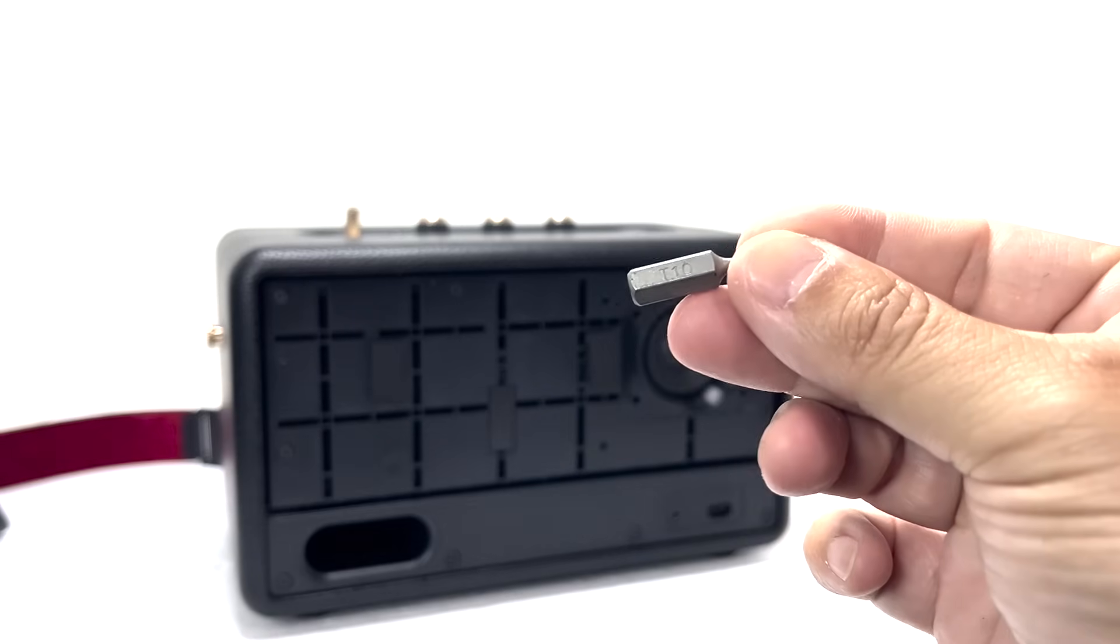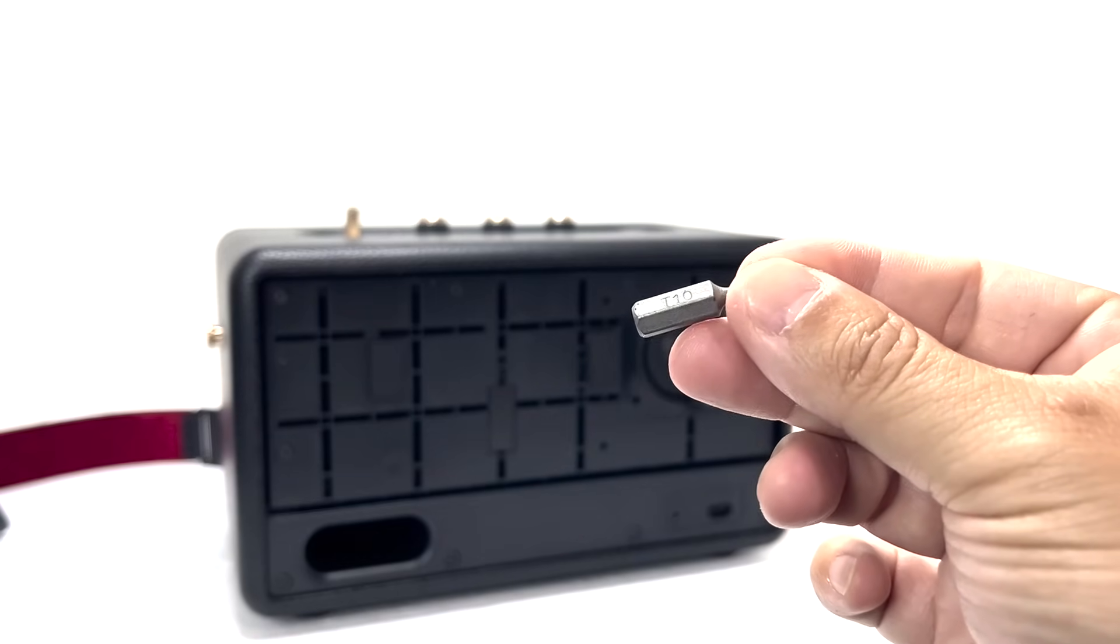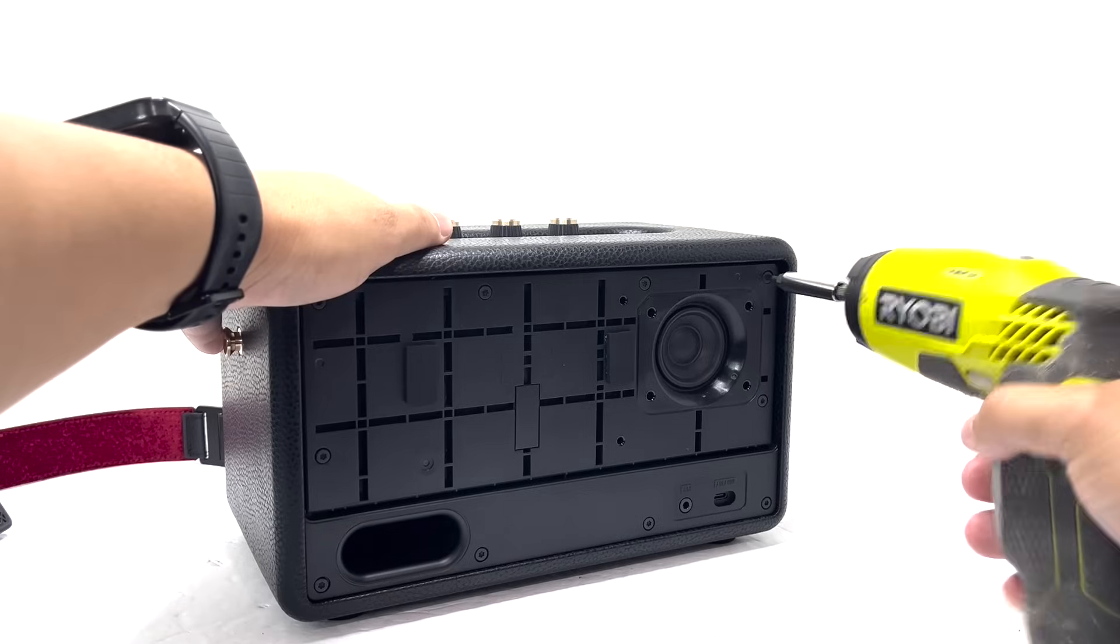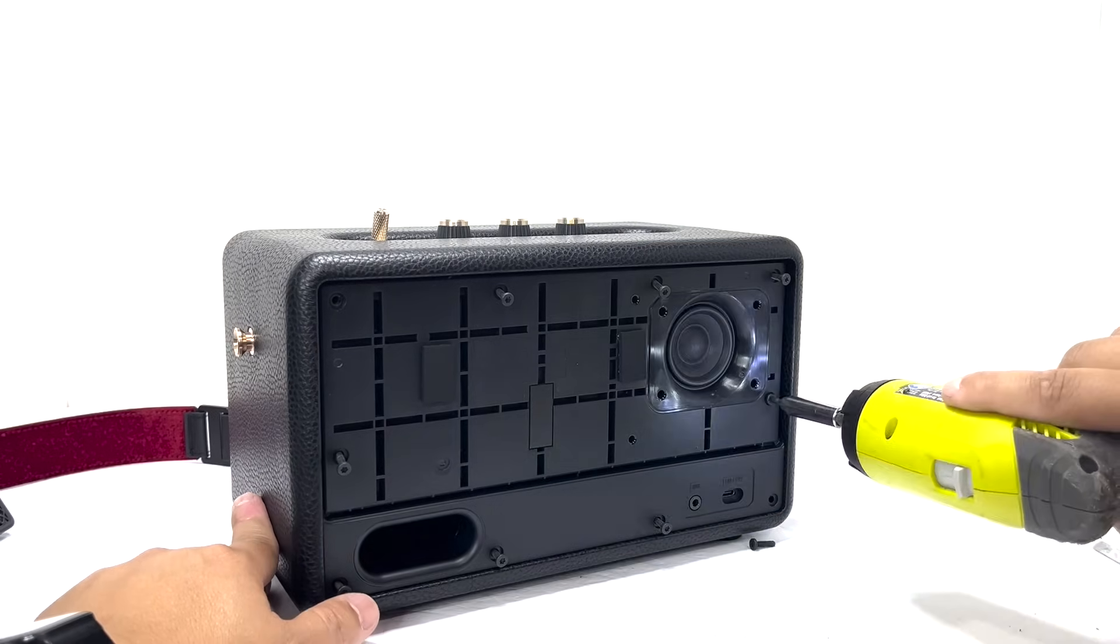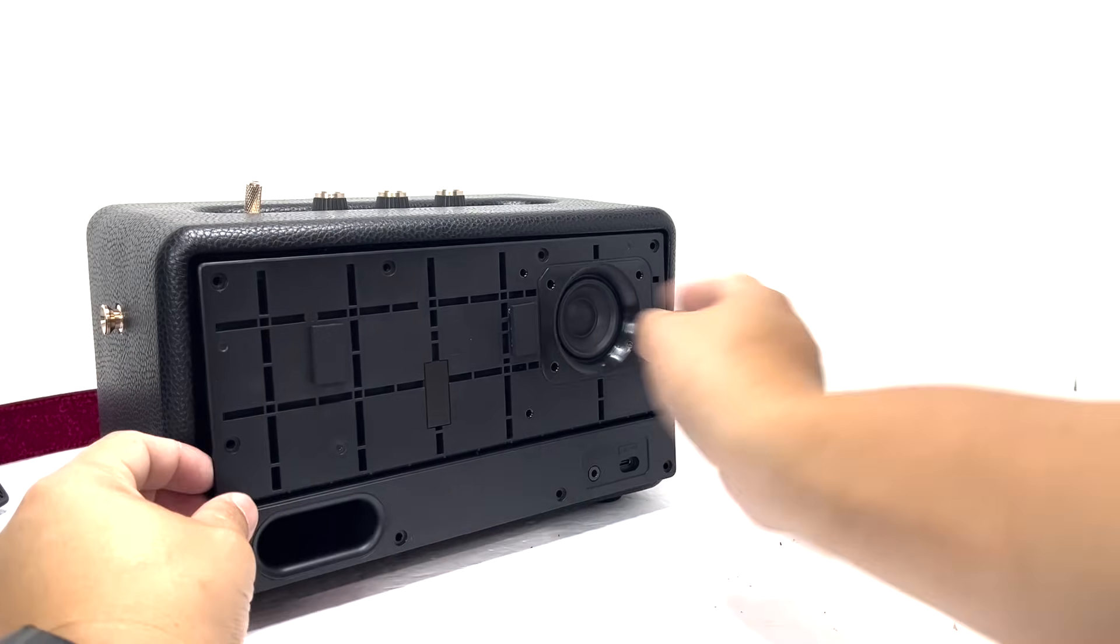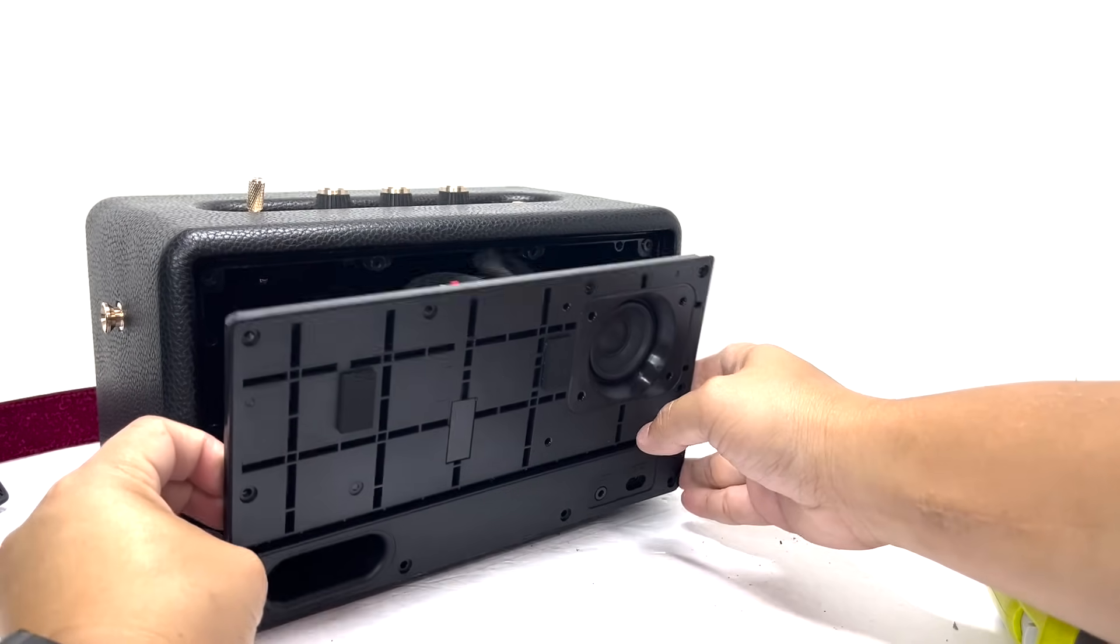Using a T10 Torx screwdriver we'll unscrew the 10 screws securing the rear panel. Once loosened, we will gently pry off the panel and disconnect the ribbon cable and connector.